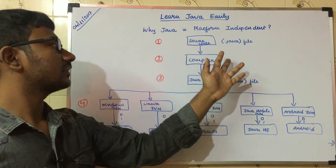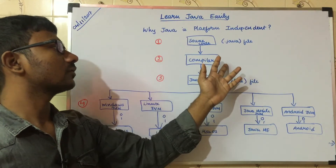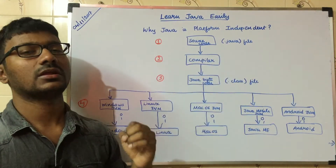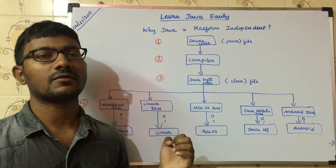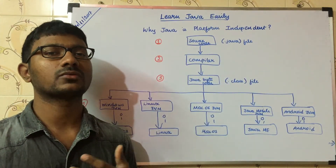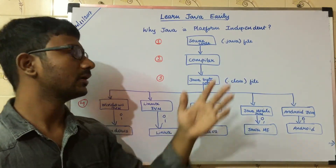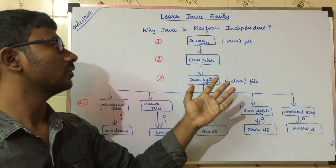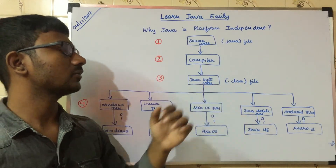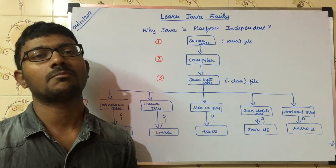If you want to use the compiler, you have to find the Java file. The compiler will convert it to bytecode — what you get is Java bytecode.